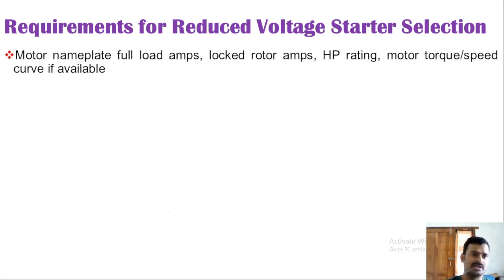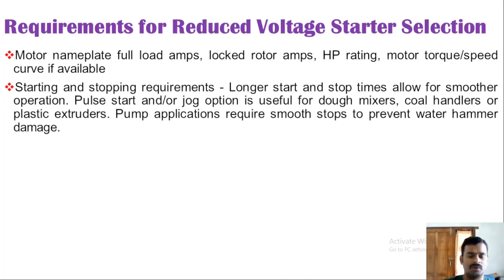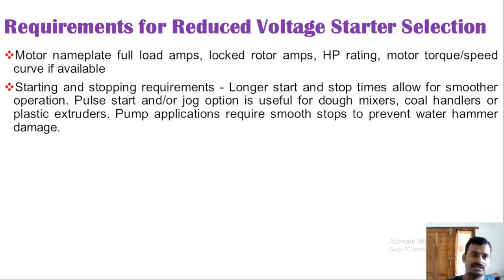Requirements for reduced voltage starter selection begin with understanding the motor nameplate: full load current, locked rotor current, HP rating, and torque versus speed characteristics. Starting and stopping requirements must also be assessed — some applications need smooth starts and stops, others need sudden starts like jogging operations. For example, a dough mixer, cold handler, or plastic extruder may need jogging, while pump applications may need smooth stops.